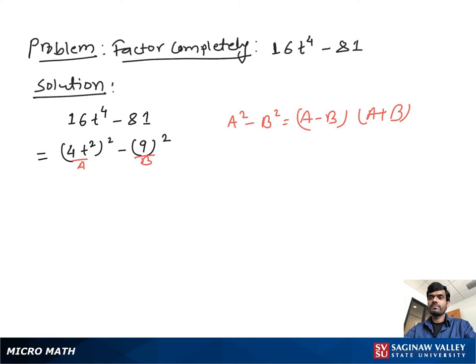If we suppose 4t square as a and 9 as b, so we can write 4t square minus 9 times 4t square plus 9. Here we see this part again can be factored.